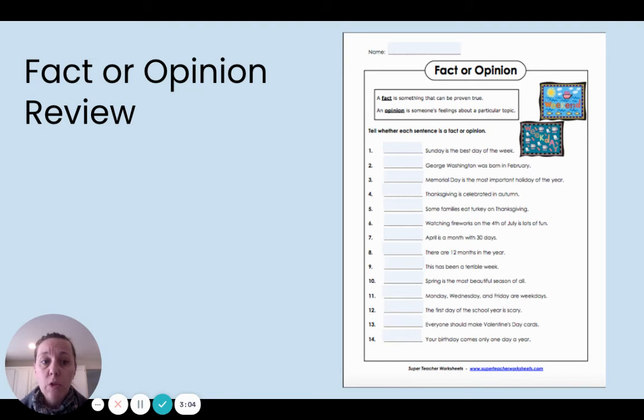Number two, George Washington was born in February. Is that an opinion? Well, no. George Washington, our very first president of the United States of America, was born in February. In fact, there's a national holiday celebrating his birthday. That is a fact. It is true. So I would write fact on the line in front of that statement.